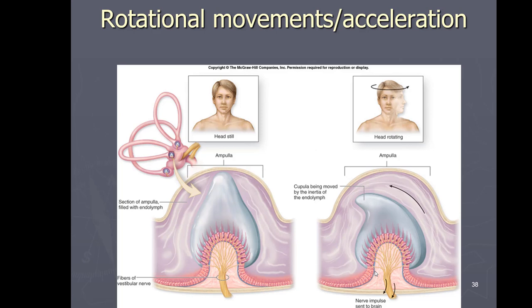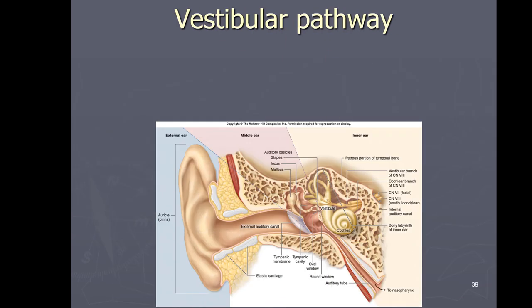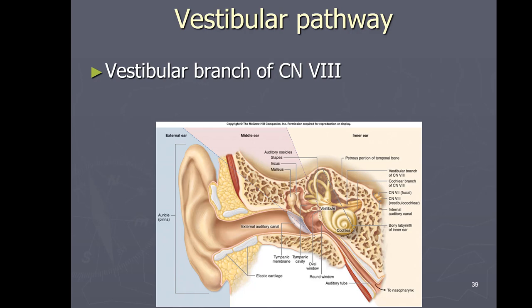To recap, the semicircular canals detect rotational movements. The vestibular pathway involved in equilibrium is the vestibular branch of cranial nerve number eight — the vestibulocochlear nerve.